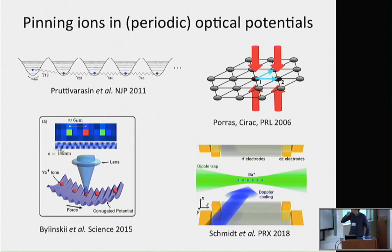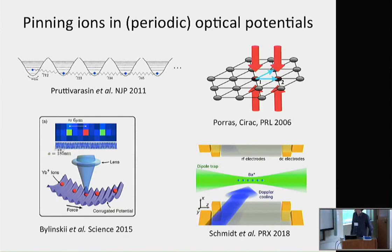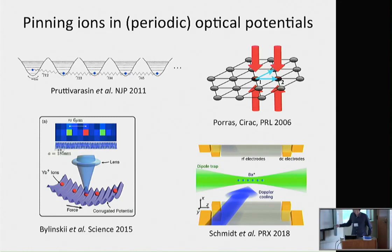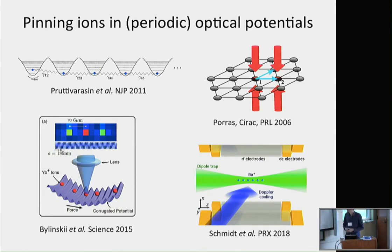You can also use these optical potentials to do state-dependent forces — we've heard many talks where this is used. We also heard yesterday from Tobias that you can even remove completely the electrical potential to do optical trapping of ions, which is relevant to hybrid atom-ion physics.